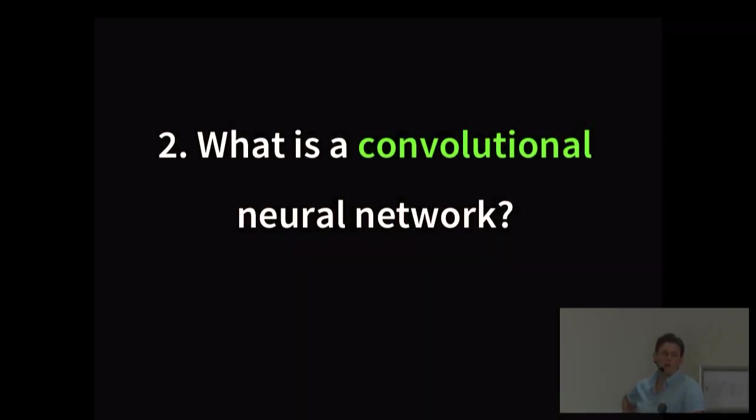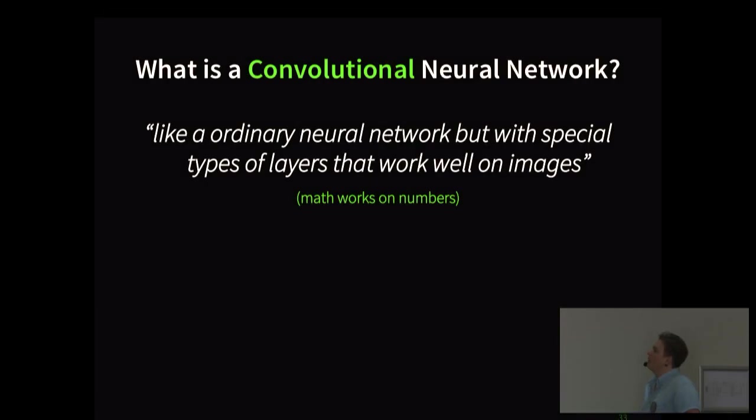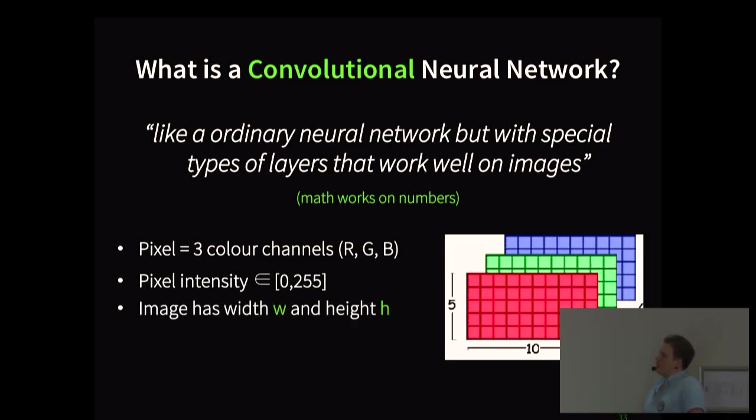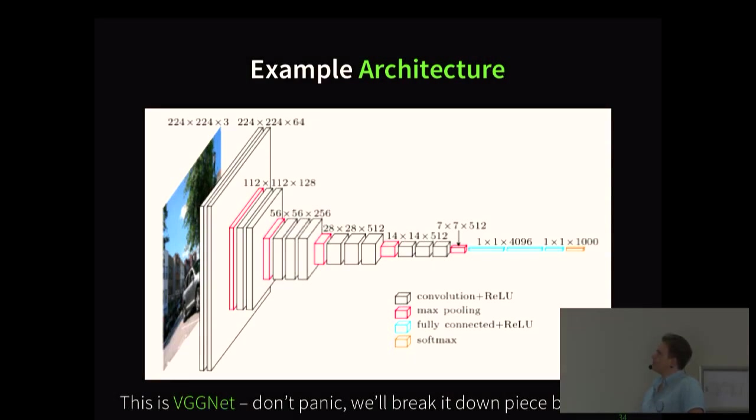So, I really like this TensorFlow Playground example because it lets you build a neural network in your browser. And so, here you can change the activation function. The learning rate you can change. And the problem setting here is we have two input variables, x1 and x2. And we're trying to predict a binary class. So, either this point that has x1 and x2 value is blue or it's orange. So, this might be like it's fraud or it's not fraud or something.